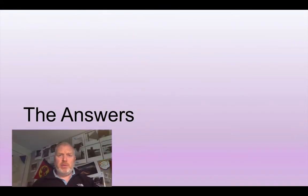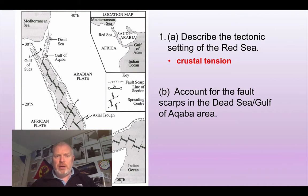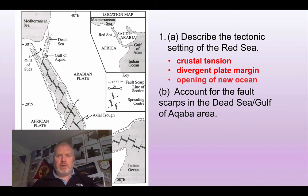Let's see what we've come up with. The first question asks you to describe the tectonic setting of the Red Sea. Clearly this is an area of crustal tension — this is a place where these two plates are being pulled apart, possibly sitting on top of a mantle plume, but we'll look more at plate movement theories a little later on. It is a divergent plate margin with new crust being made here. As a result, the Red Sea is opening up and getting wider — this is the early stages of the formation of a new ocean.